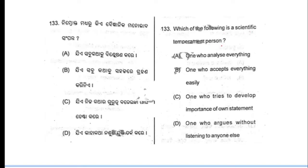Now moving to next question. Question number 133: which of the following is a scientific temperament person? A scientific temperament person is one who analyzes everything, and one who tries to develop the importance of their own statement.